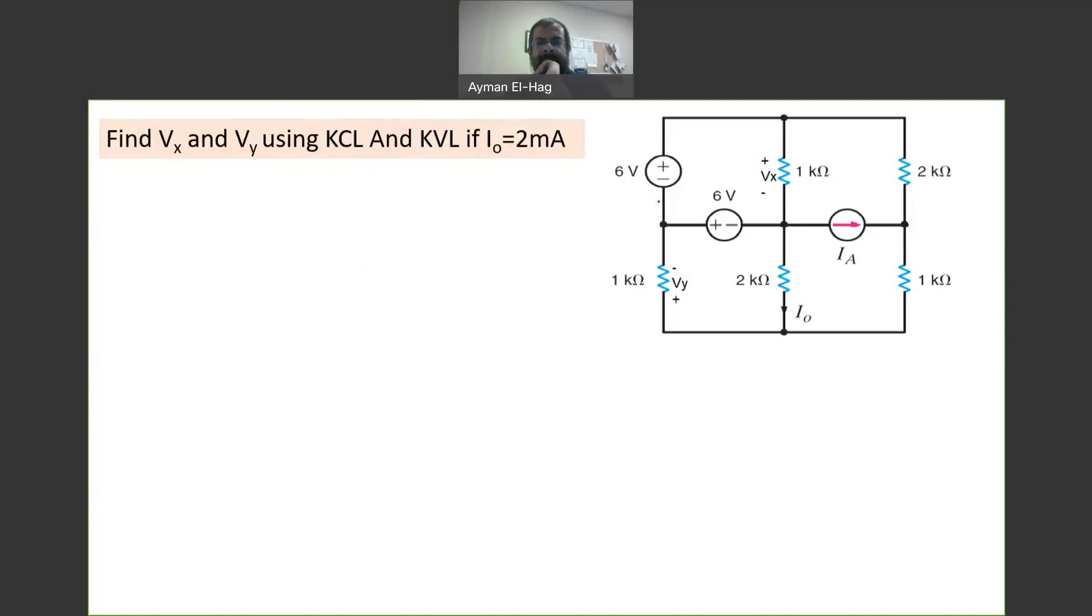This question says find VX as polarity assigned as such, and VY, if I0, this current I0, is equal to 2 milliamp, and we'll use KCL and KVL. Now, IA here is not given to us.